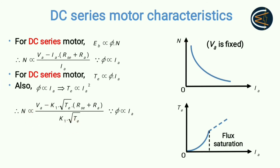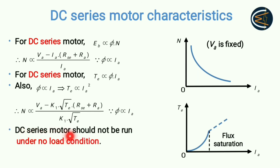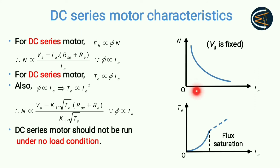An important point: a DC series motor should never be run under no-load condition. As you can see from the speed-versus-torque relationship, for a low value of torque or under no-load condition, the speed will be dangerously high. As torque or armature current increases, the speed reduces.